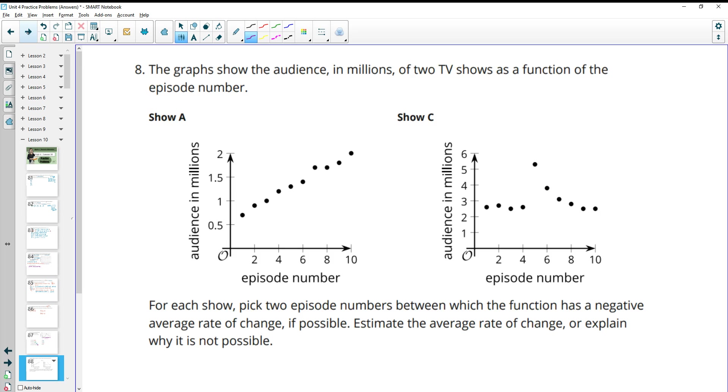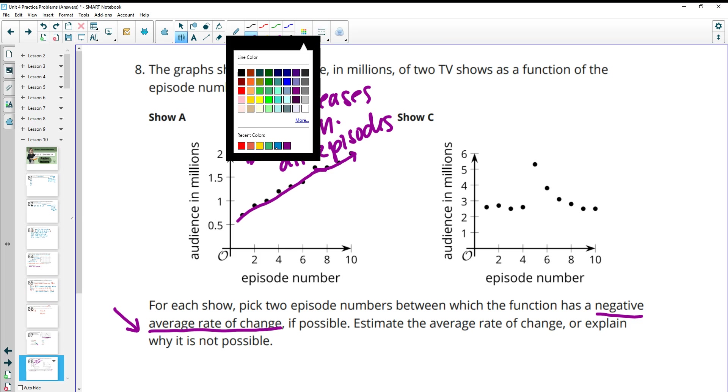Number 8. The graph shows the audience in millions of two TV shows as functions of the episode number. For each show, pick two episode numbers between which the function has a negative average rate of change. And remember, that means it needs to be going down between those two points. Estimate the average rate of change or explain why it's not possible. So when we're looking at show A, we're looking for two points where it goes down from left to right. And these keep seeming to go up. This one looks like it maybe stays about the same, but it doesn't look like it goes down. So there is no negative rate of change here. So none increases between all the episodes.